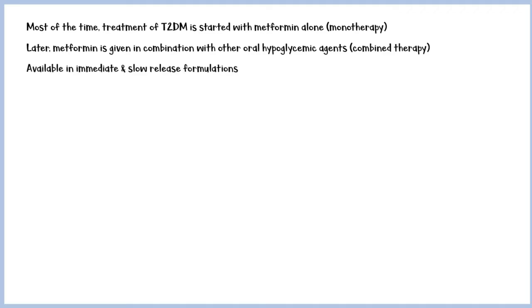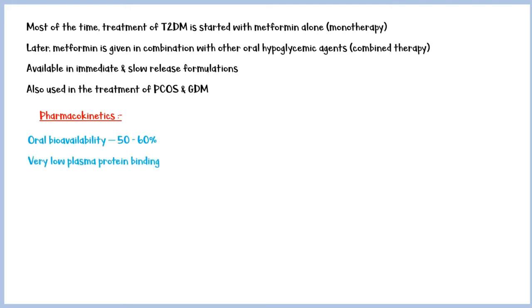Most of the time, treatment of type 2 diabetes is started with metformin alone. Later in the disease, metformin is given in combination with other oral hypoglycemic agents or insulin. It is available in immediate and slow-release formulations and is also used in the treatment of polycystic ovarian syndrome and gestational diabetes mellitus. If we take pharmacokinetics of metformin, it has an oral bioavailability of 50 to 60% and very low plasma protein binding. Duration of action is 6 to 8 hours. Metformin is not metabolized in the liver and excreted unchanged in urine via tubular secretion.